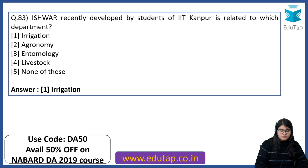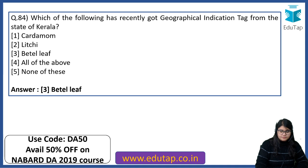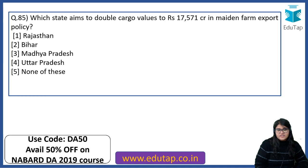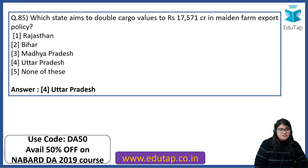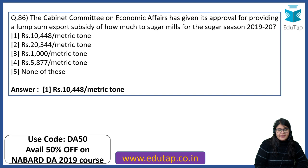Which of the following recently got the geographical indication tag from the state of Kerala? The right answer is Betel Leaf. Which state aims to double cargo values to Rs. 17,571 crore in its maiden farm export policy? The right answer is Uttar Pradesh. The Cabinet Committee on Economic Affairs has approved a lump sum export subsidy of Rs. 10,448 per metric tonne to sugar mills for the sugar season 2019-20.